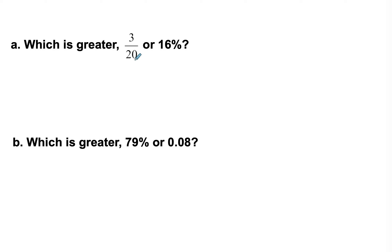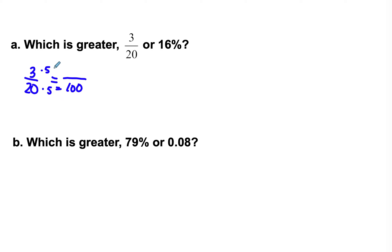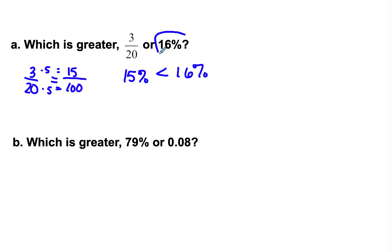Which is greater: 3/20 or 16 percent? I'm going to change 3/20 into a percent so I can compare the percents. One way is to change it into a fraction over 100, because a fraction out of 100 means percent. I know that 20 times 5 equals 100, so I do 3 times 5, which gives me 15 out of 100, which is 15 percent. So 15 percent is less than 16 percent — 16 percent is the greater one.